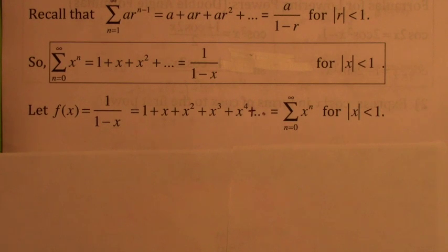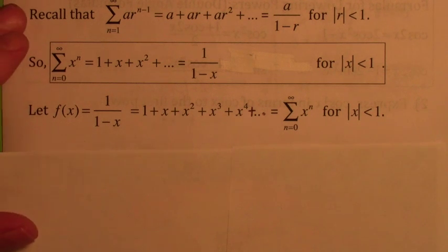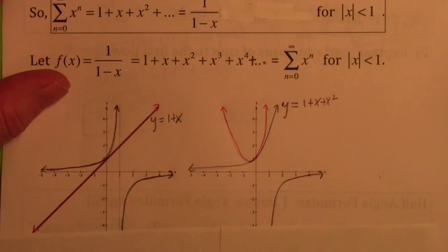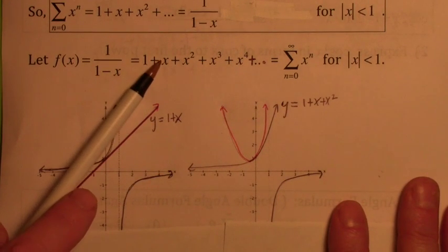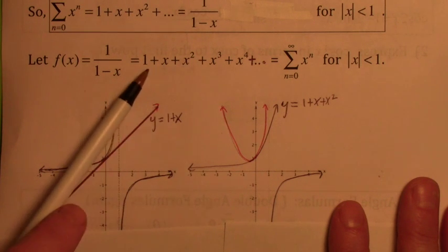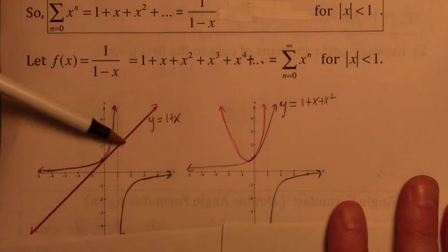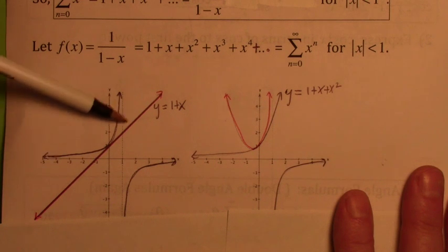What we're going to find is that a lot of the functions you've seen — like sine of x, cosine of x, and e to the x — can also be represented in terms of power series. If you were to take this function 1 over 1 minus x and just chop off the first couple of terms, those would be the partial sums. If you look at the first two terms, that would be s sub 2: 1 plus x. This linear function is the tangent line to this function at x equals 0.